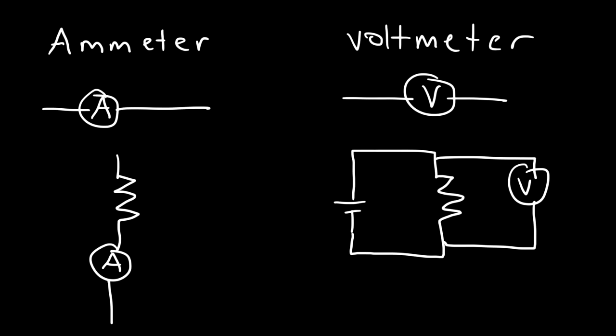To calculate the current flowing through a resistor, connect the ammeter in series with that device. If you want to measure the voltage, you need to connect a voltmeter in parallel with the device — or across the device.